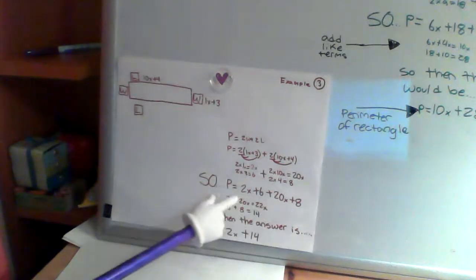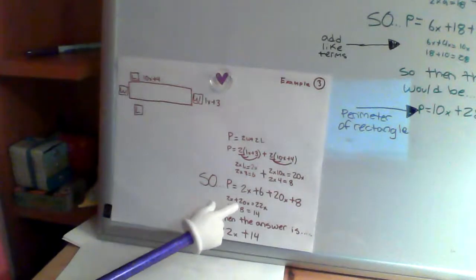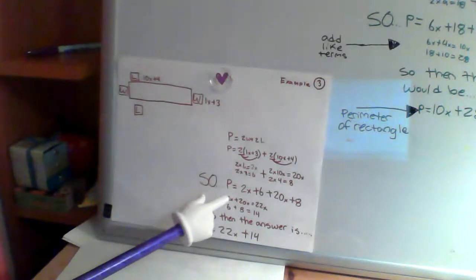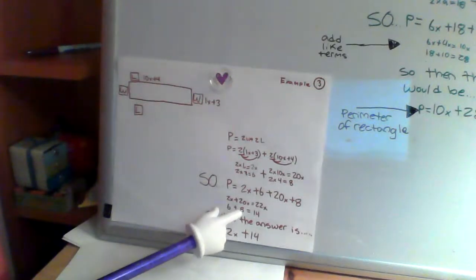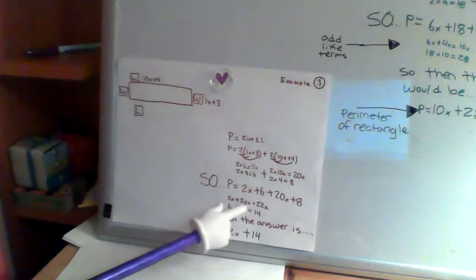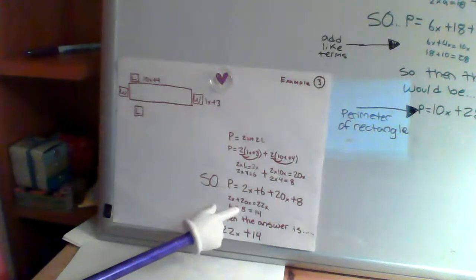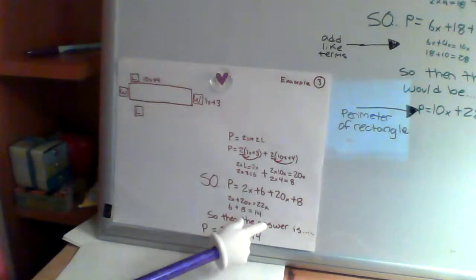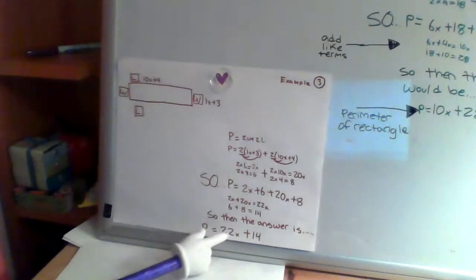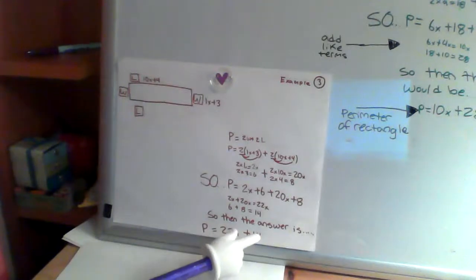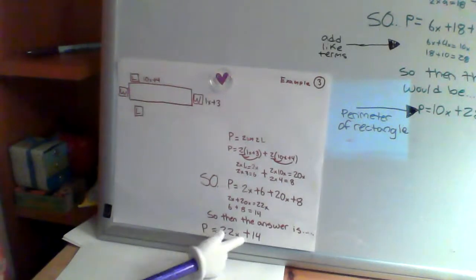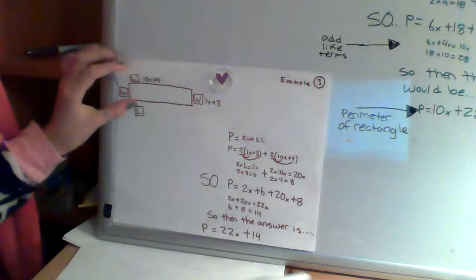Then you'd have to simplify by adding the like terms. So you'd do 2X plus 20X equals 22X. And then 6 plus 8 equals 14. So your answer is P equals 22X plus 14, which is the perimeter of this rectangle.